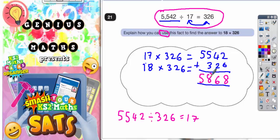So, your final answer is 5,868. So, just a quick recap. Using this fact here, we can multiply the two smaller numbers together to get back to the larger number.